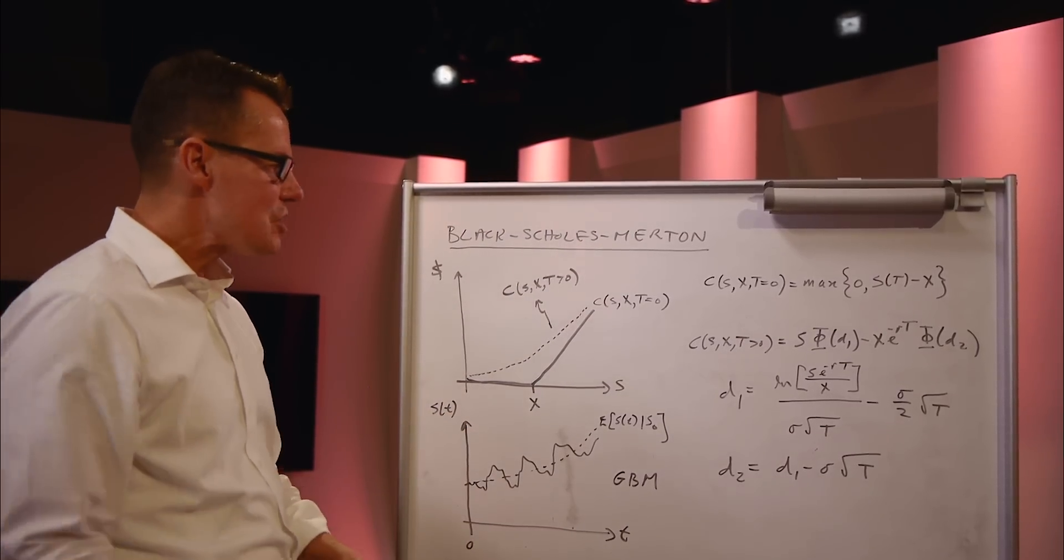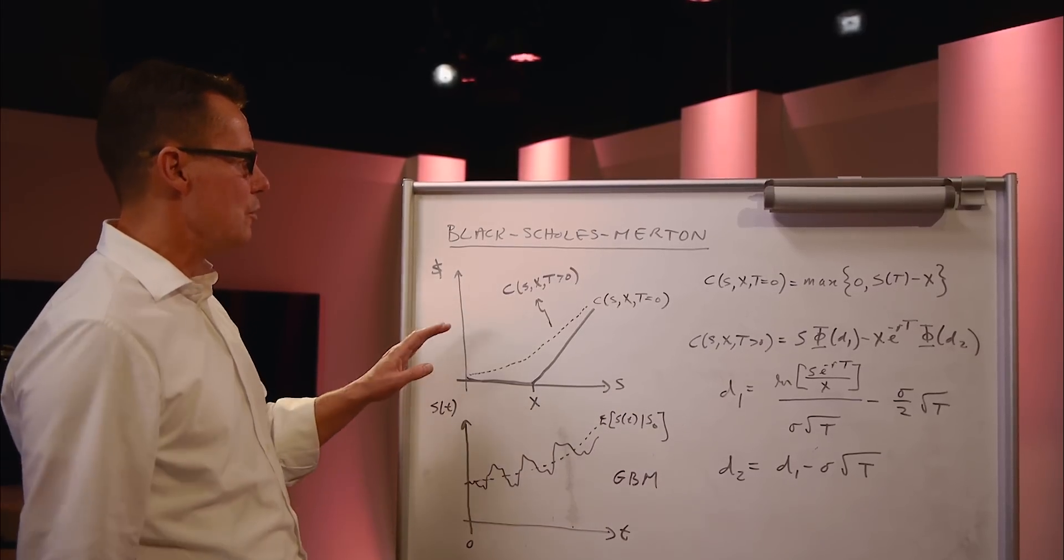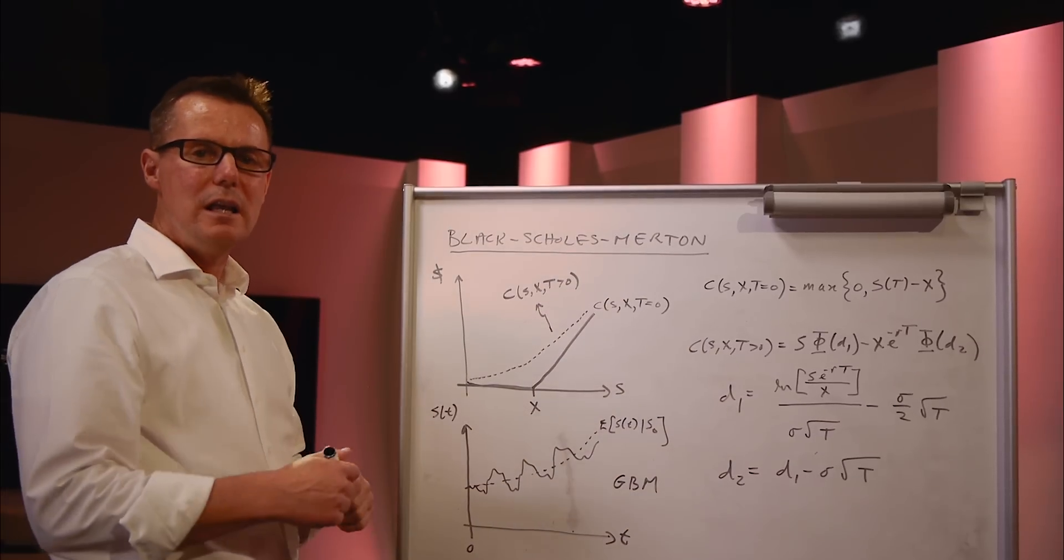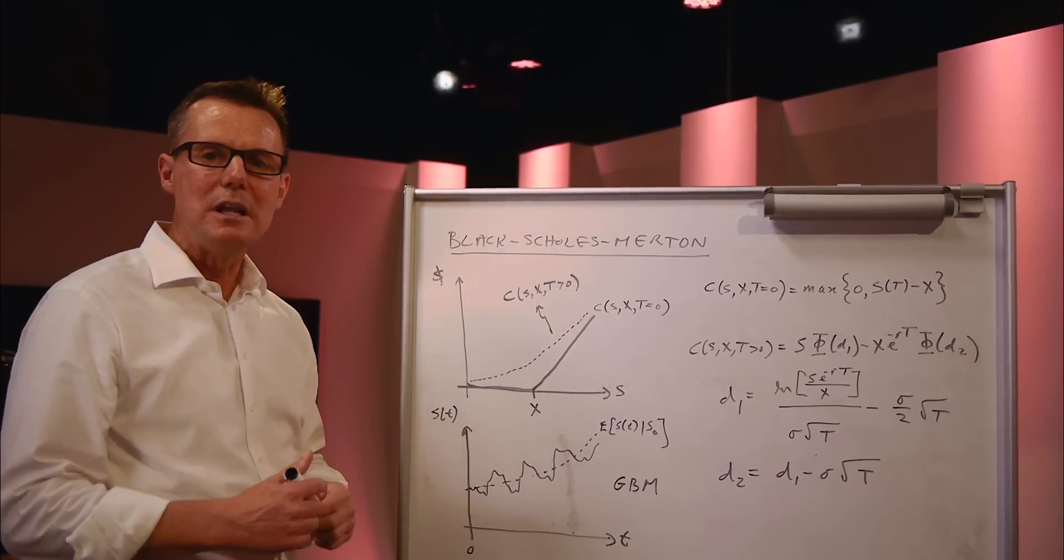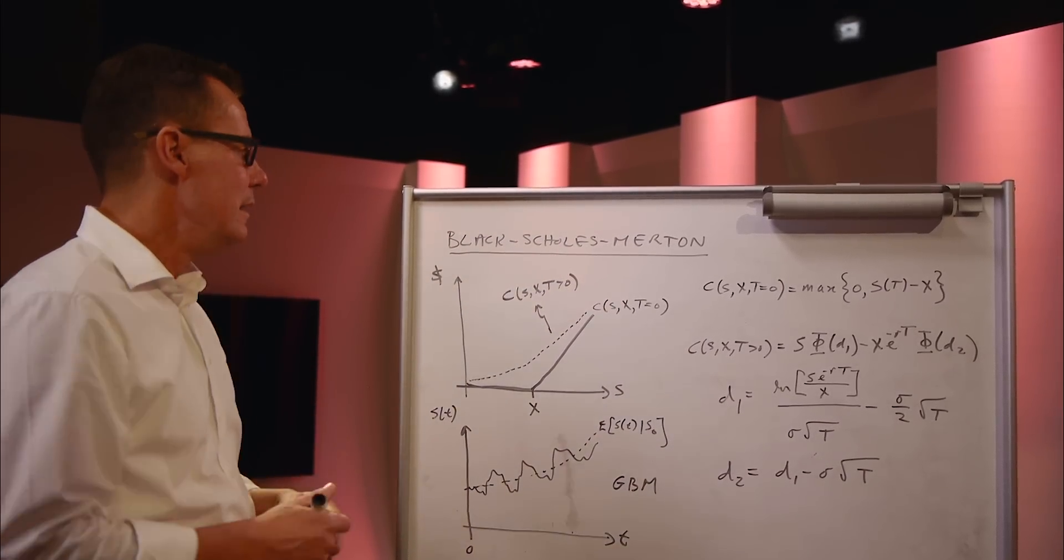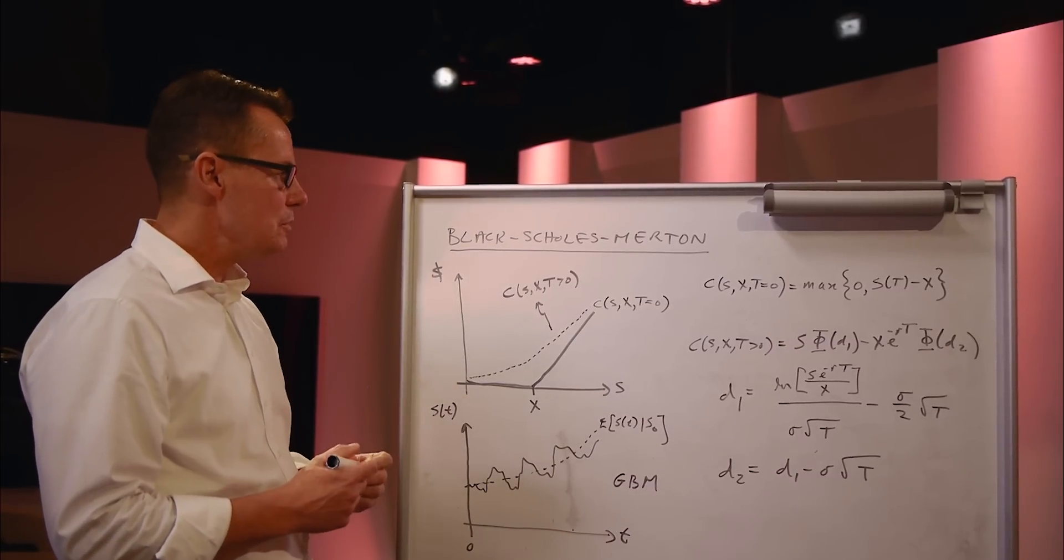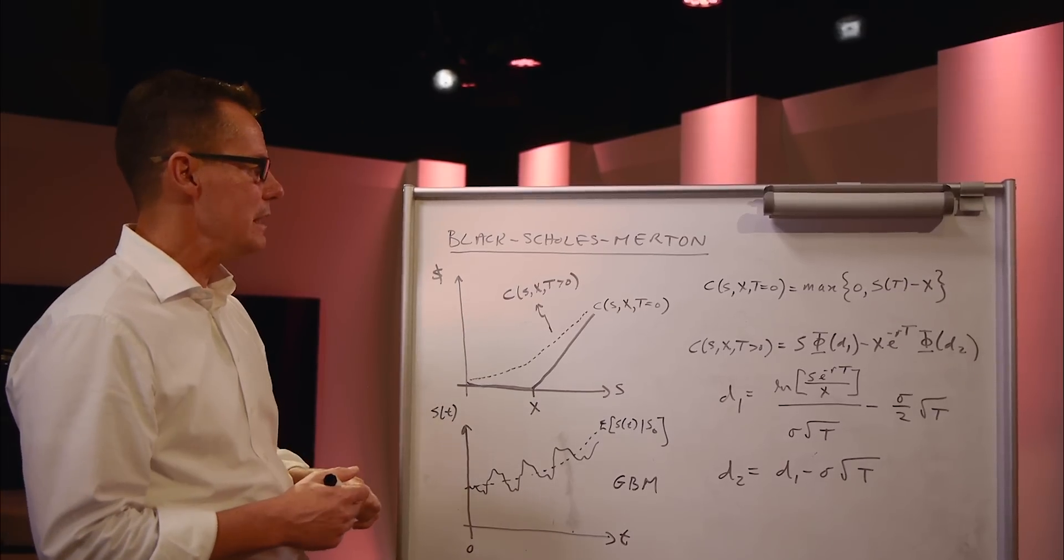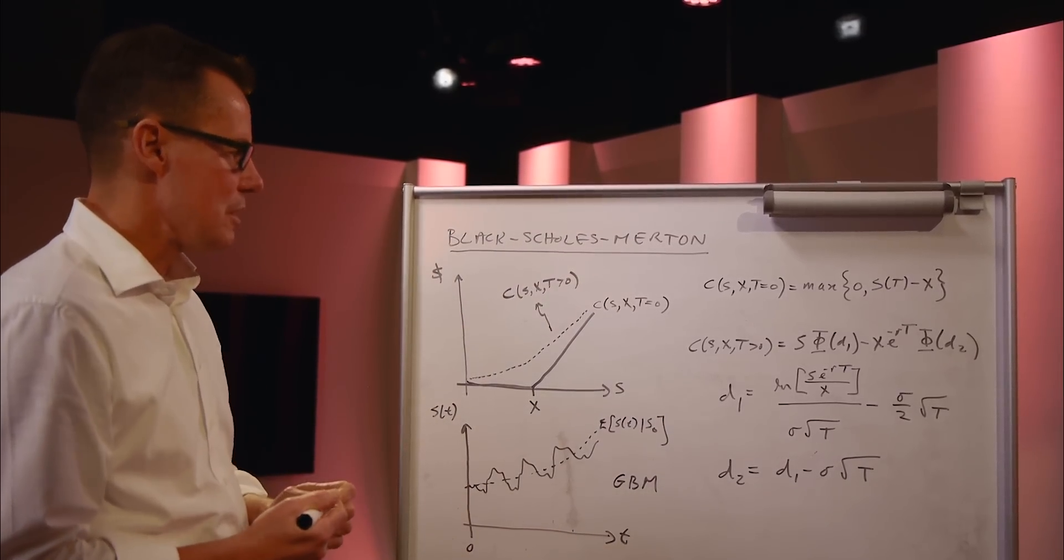So that, in a nutshell, is the Black-Scholes model. The reason why we refer to it as the Black-Scholes-Merton model is because there are really three characters who are instrumental in the development of this idea. Black-Scholes and Robert Merton, who wrote a paper independently of Black-Scholes and effectively arrived at the same result.